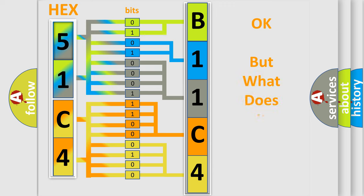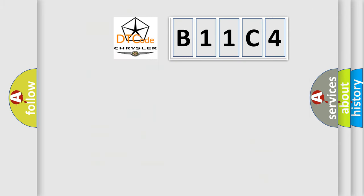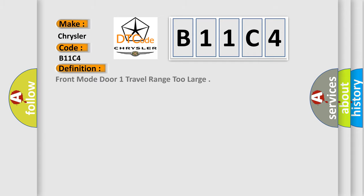We now know how the diagnostic tool translates received information into a more comprehensible format. The number itself does not make sense to us if we cannot assign meaning to what it actually expresses. So, what does the Diagnostic Trouble Code B11C4 interpret specifically for Chrysler car manufacturers? The basic definition is: Front mode door 1 travel range too large.